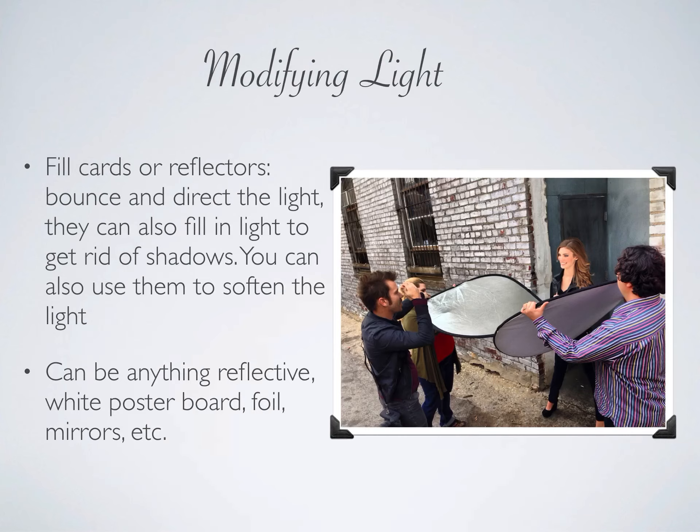Modifying the light. You can use fill cards or reflectors to bounce or direct the light onto things. This is more for the second part of your project. We have big reflectors at school that we've worked with, but you could use anything that's reflective — like a white poster board or a piece of aluminum foil. When I was a poor college kid, we used to take cardboard and wrap it in aluminum foil and that would be our reflector. You can use a mirror or anything that's reflective.